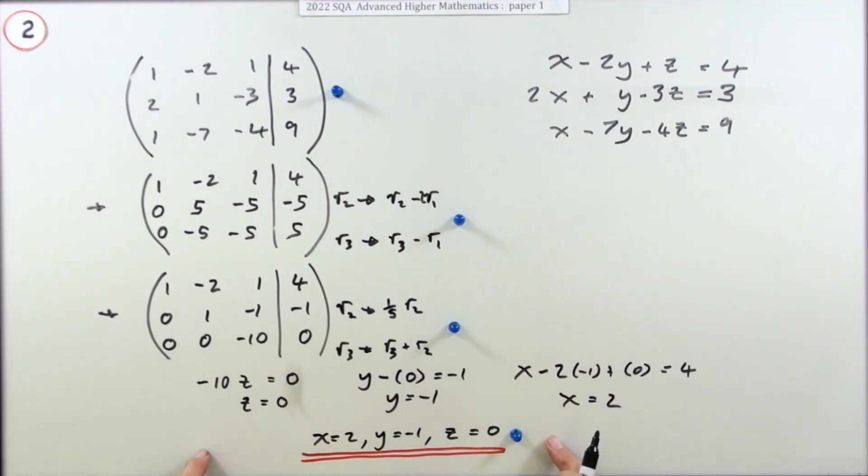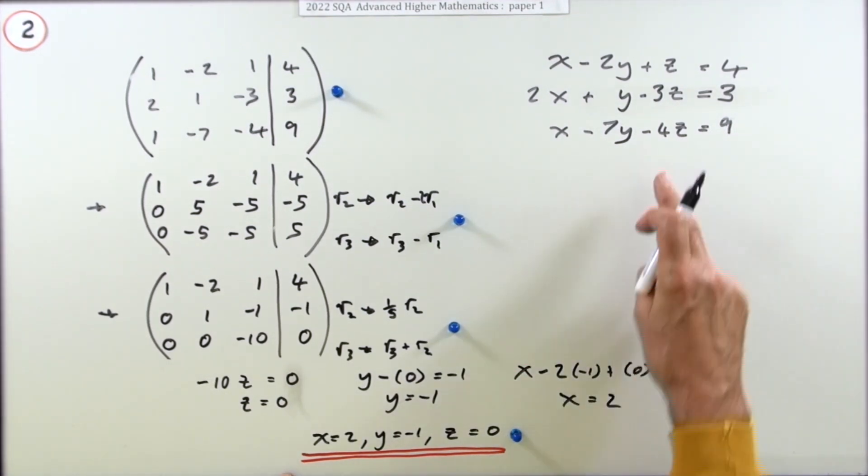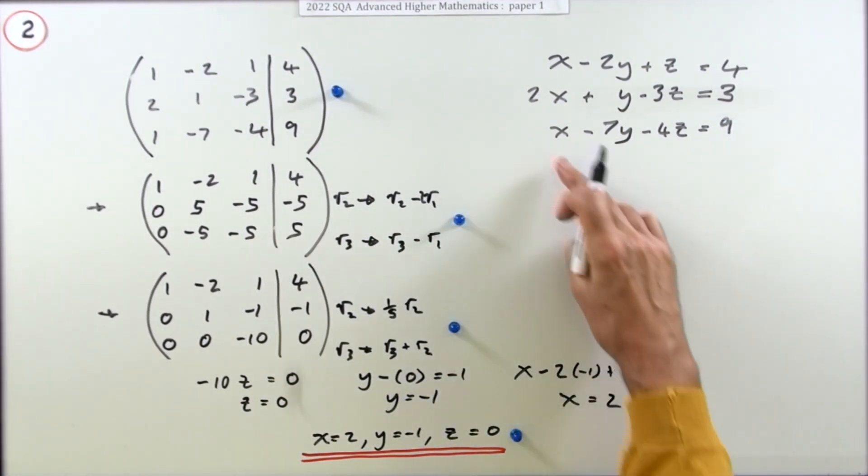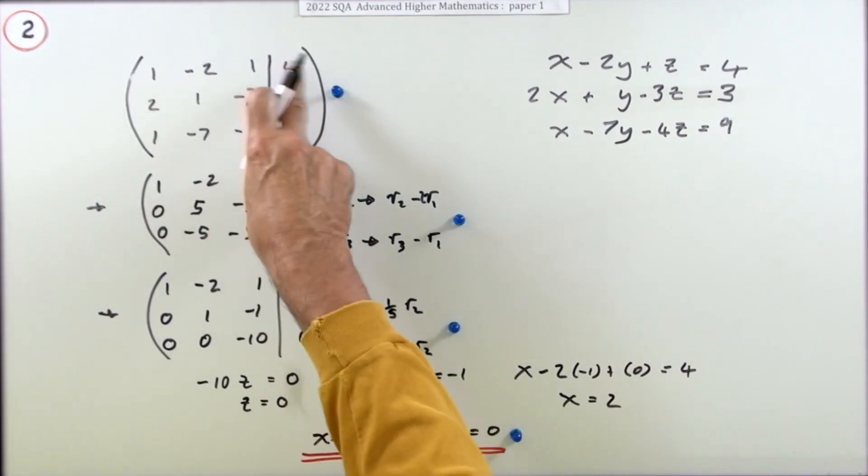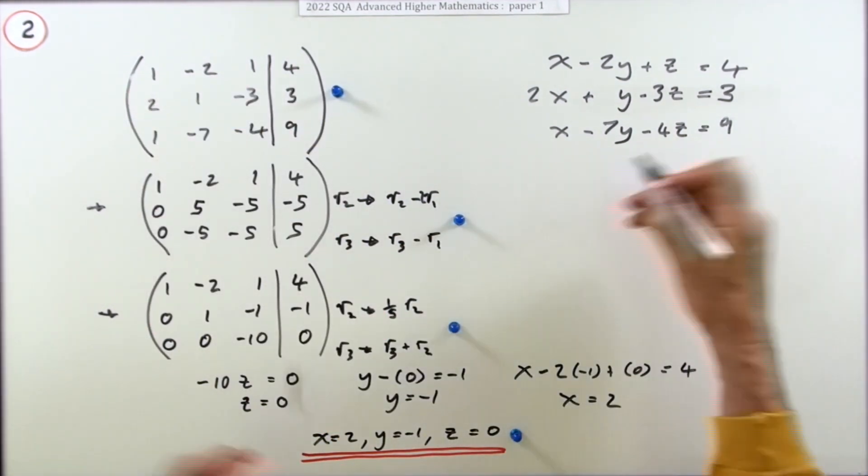The handy thing about this particular question which makes it particularly easy is you've got a definite answer. It's not like the ones where you end up with parametric equations, because what you can do here is you can check if it's right, and then you know you've got your four marks. Because if those are the correct answers, this should work.